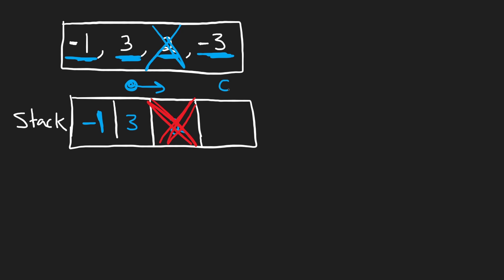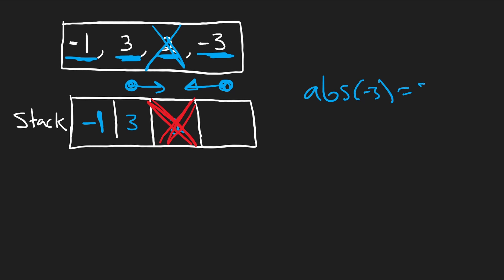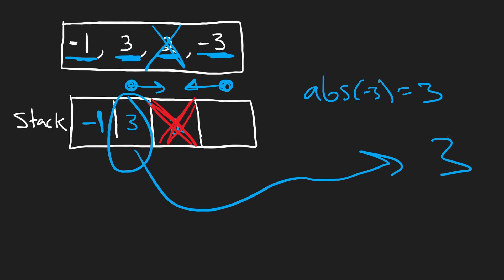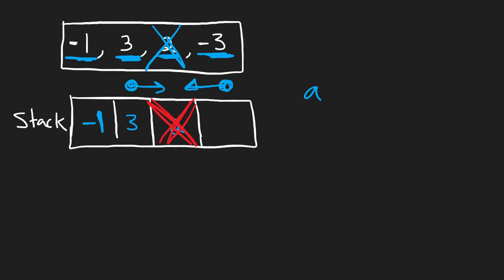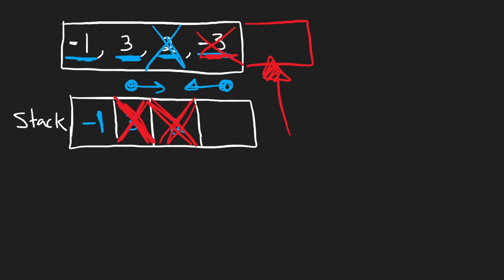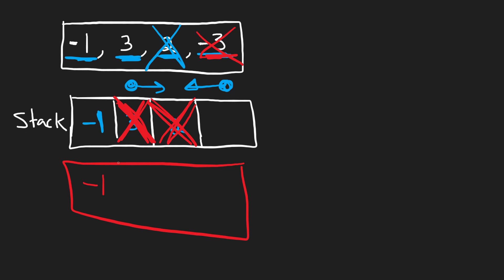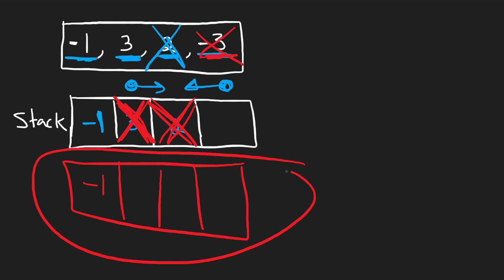That 3 is moving to the right, and the negative 3 is moving to the left, so these asteroids are going to collide as well. The absolute value of negative 3 is 3, and the asteroid it's colliding with is also 3 — they're equal. So both of the asteroids are going to be destroyed. That means we can no longer add the negative 3 to our stack, and the 3 that was already in the stack has to also be removed. Since our array is finished, the output is just a single negative 1.